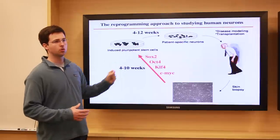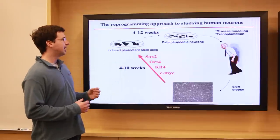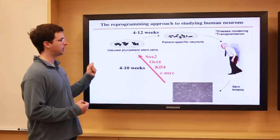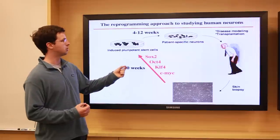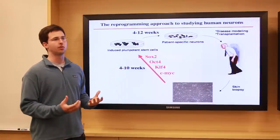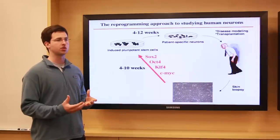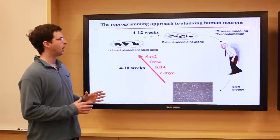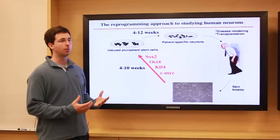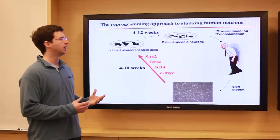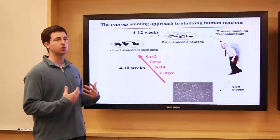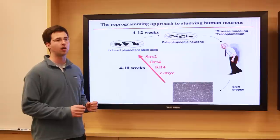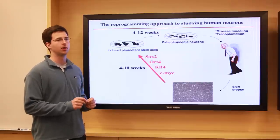Once you have these induced pluripotent stem cells, turning them into neurons and coaxing them into forming the cells you want can take up to three months, to go from the embryonic stem cell state to patient-specific neurons. This is also not so straightforward — it's very difficult to generate a pure population of cells of interest from that patient. But you can get a variety of different types of neurons, so it's a very powerful approach, though generating them is not completely straightforward.